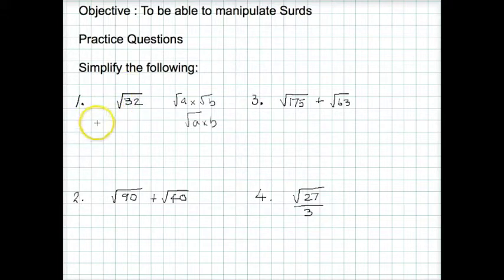So I can split this root into root 16 times root 2. But root 16 can be rationalised because root 16 is 4. So our answer just simply becomes 4 times root 2. We don't write the times sign, it just becomes 4 root 2 in its simplest form.